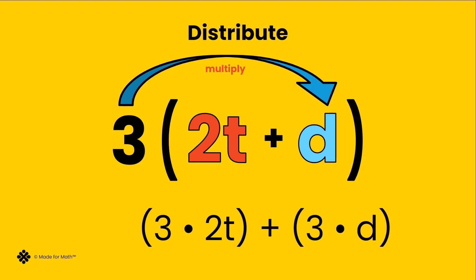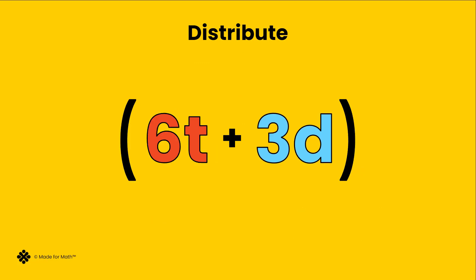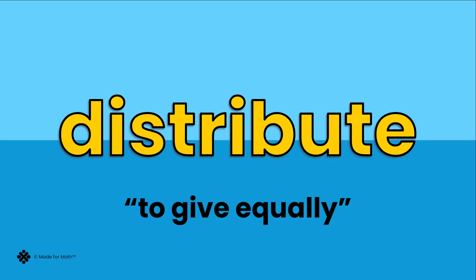Plus three times d. To describe the combo meals together after we distributed, we would say six t plus three d. Distribute: to give equally.